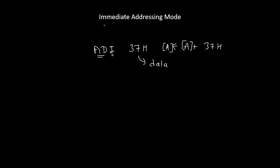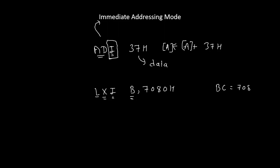A simple shortcut to identify immediate addressing mode is that somewhere in the instruction you will find the letter I. Another example is LXI B, 7080H. LXI stands for load register pair immediate. The BC register pair will be loaded with data 7080H. Here, the operand 7080H is data, so its addressing mode is immediate addressing mode. You can also identify it because LXI ends with the letter I.